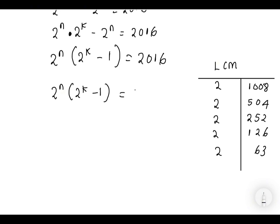2016 can be written as 2 to the power 5 multiplied by 63. Notice that 2 to the power 5 is an even number and 63 is an odd number. And 2 to the power n is an even number and 2 to the power k minus 1 is an odd number. This means that 2 to the power n is equal to 2 to the power 5. Because we have the same base, the exponents must be equal. So n is equal to 5.